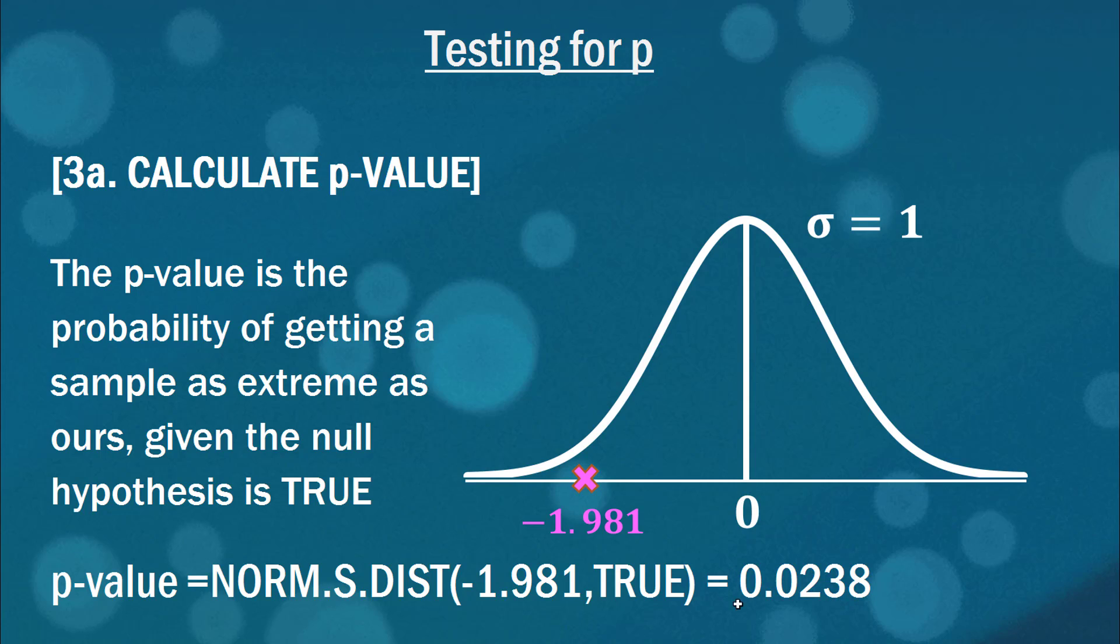Now this will effectively tell us which levels of significance we will be rejecting this null hypothesis for. Because you know that if the p-value is less than your level of significance, you reject the null hypothesis, right? So because this is less than 0.05, we'll reject the null hypothesis at 5%. But because it's greater than 0.01, we won't reject it at a 1% level of significance.